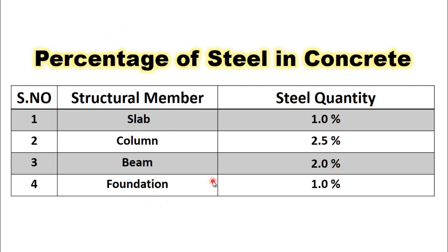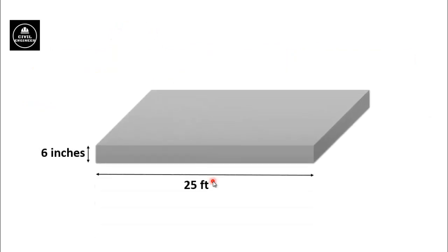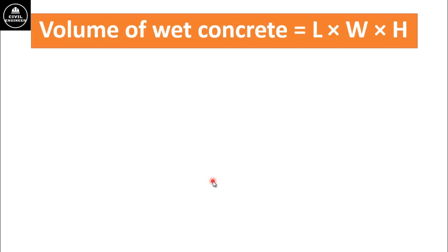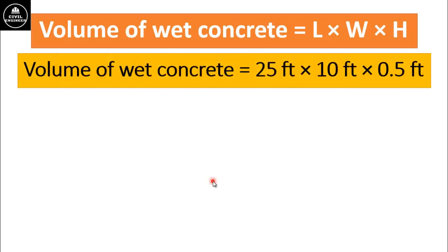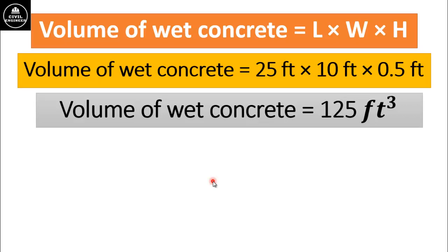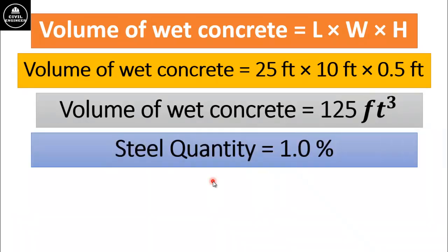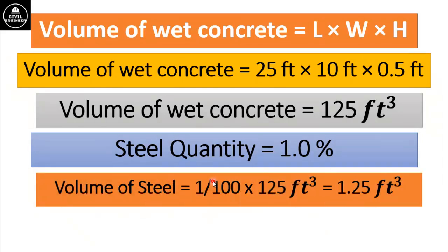I will illustrate this by doing a simple problem of a slab. We have a slab having length 25 feet, width 10 feet, and thickness 6 inches. The volume of wet concrete for the slab will be length multiplied by width multiplied by height, which equals 125 cubic feet. For a slab, steel quantity is generally taken as 1%, so the volume of steel will be 1 divided by 100 multiplied by 125 cubic feet, which equals 1.25 cubic feet.